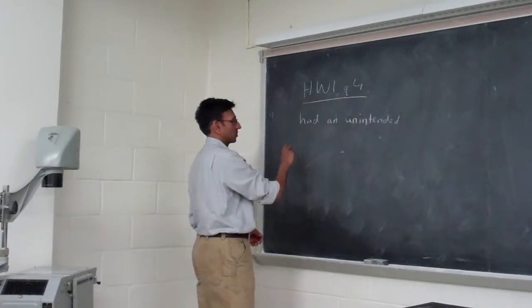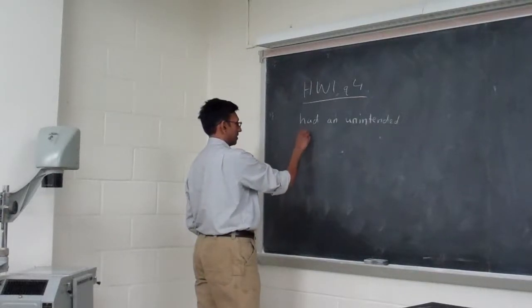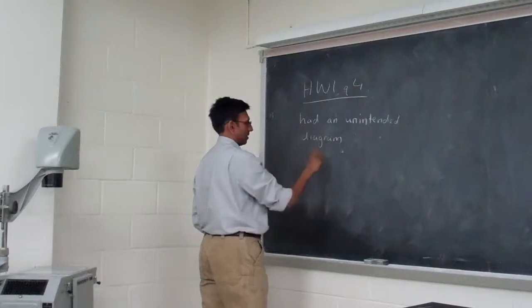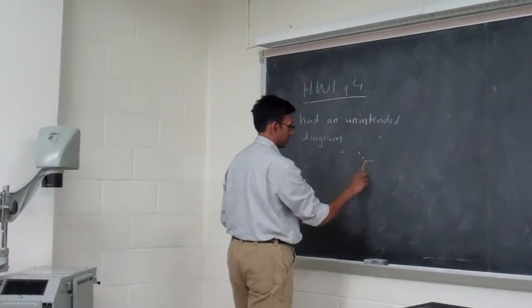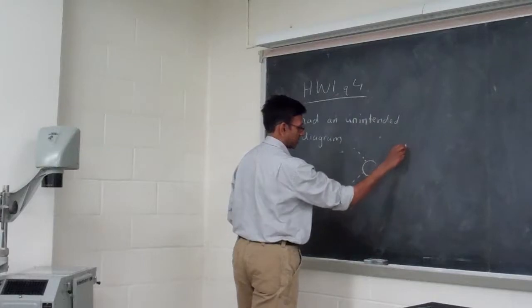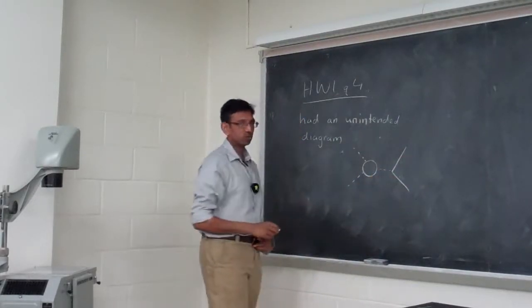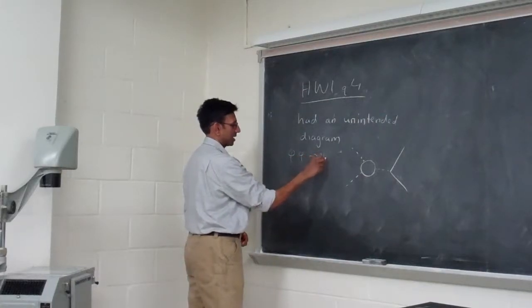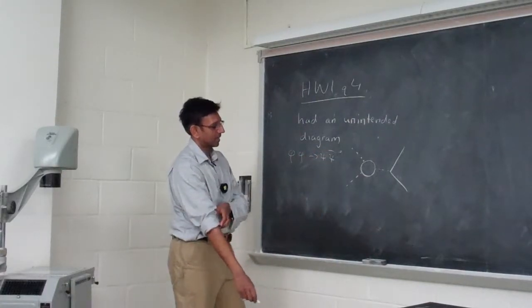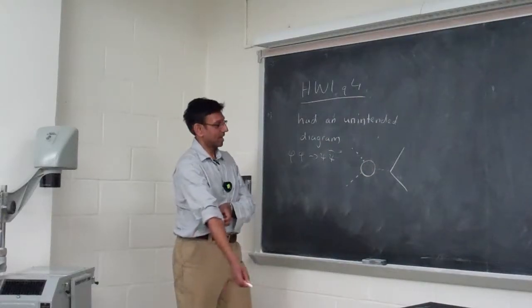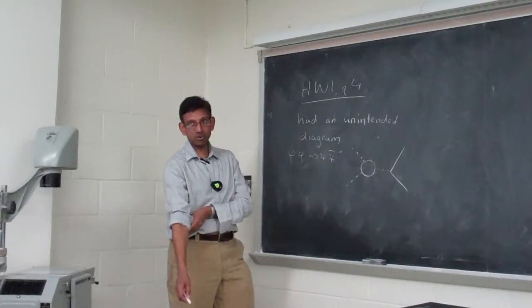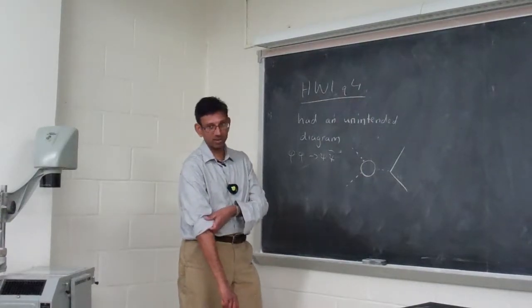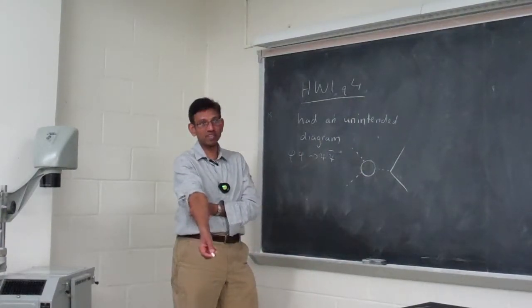I hope none of you came across this unintended diagram. It was two scalars to two fermions — psi-pi-psi. And there was this diagram. The reason I gave you that large-N approximation was to avoid any kind of loop diagram that wasn't the loop diagram that we did.